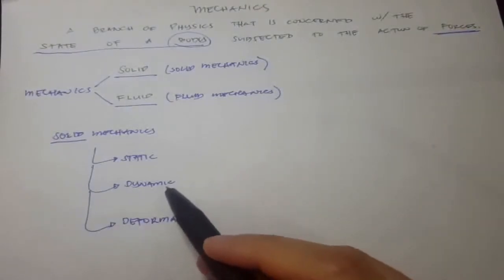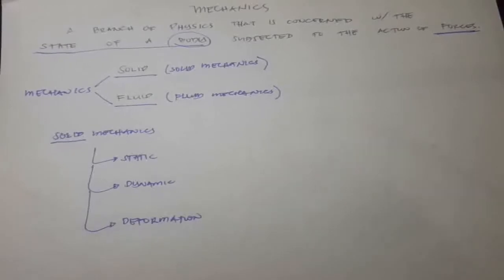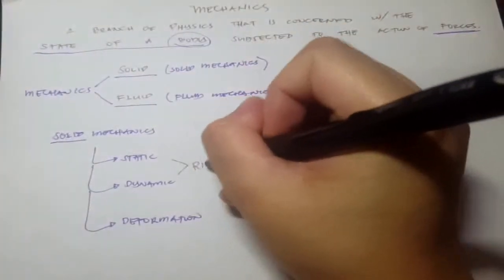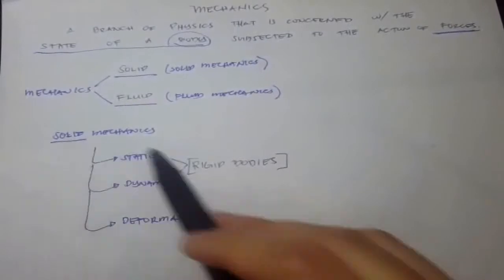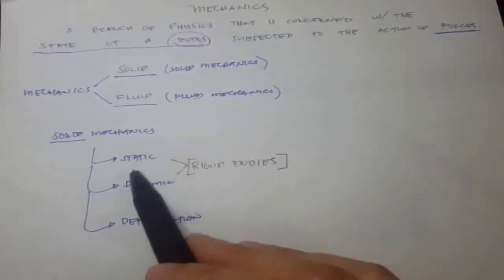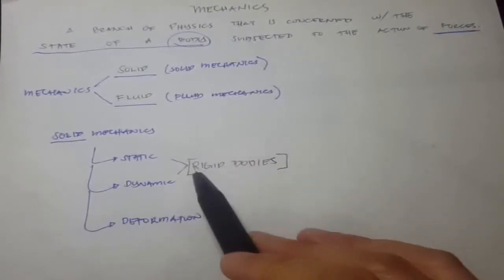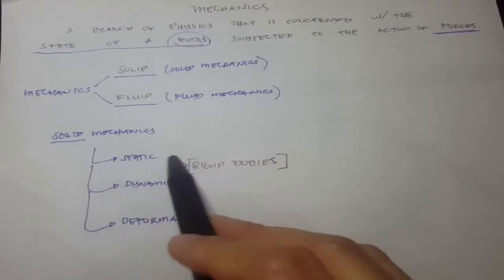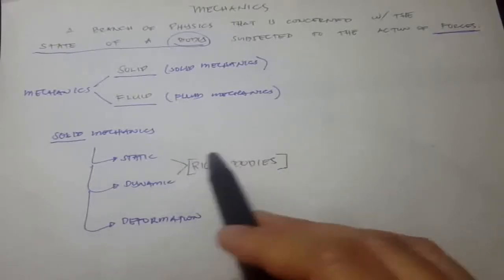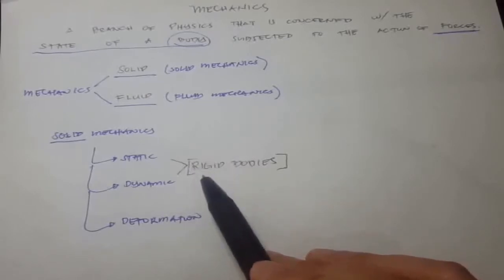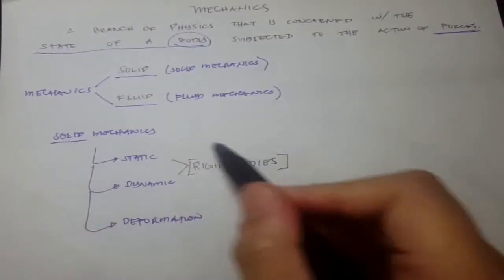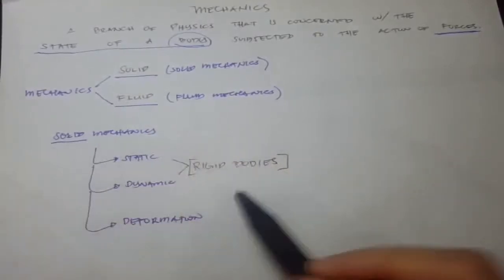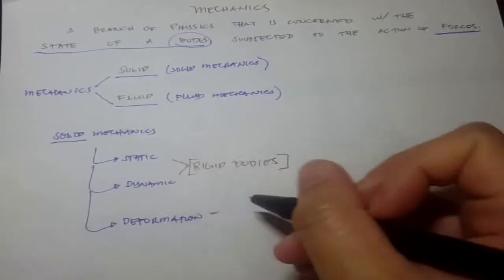For static and dynamic responses, we have what we call rigid bodies. In solid mechanics, when under static or dynamic response, we treat the bodies as rigid — meaning we do not consider deformation. So solid mechanics is further categorized into two: solid mechanics of rigid bodies and solid mechanics of deformable bodies.